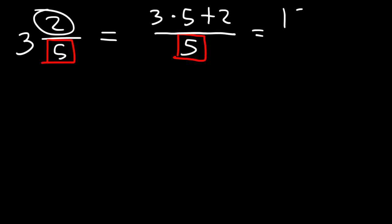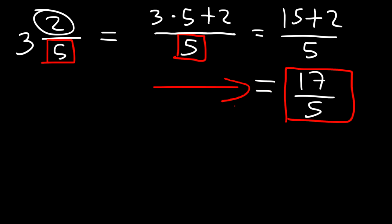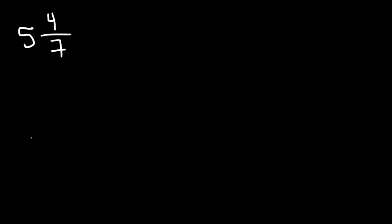So three times five is fifteen, and fifteen plus two is seventeen. Therefore, three and two-fifths is equal to the improper fraction seventeen over five. Here are some more example problems — go ahead and convert these mixed numbers into improper fractions.